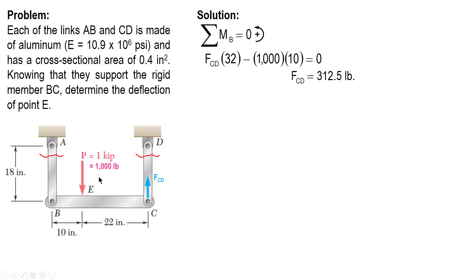And after this, solve for F_AB. So the value of F_BA or F_AB is 687.5 pounds.